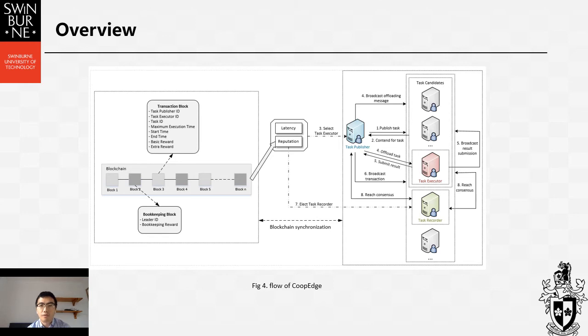This picture is the overview of CoopEdge and the main workflow. Firstly, when the edge server wants to offload a task, it first publishes the task requirements and a basic reward to all edge servers on CoopEdge as the publisher. Upon receiving a published task, an edge server inspects the network latency between itself and the publisher and may express interest in executing the task.